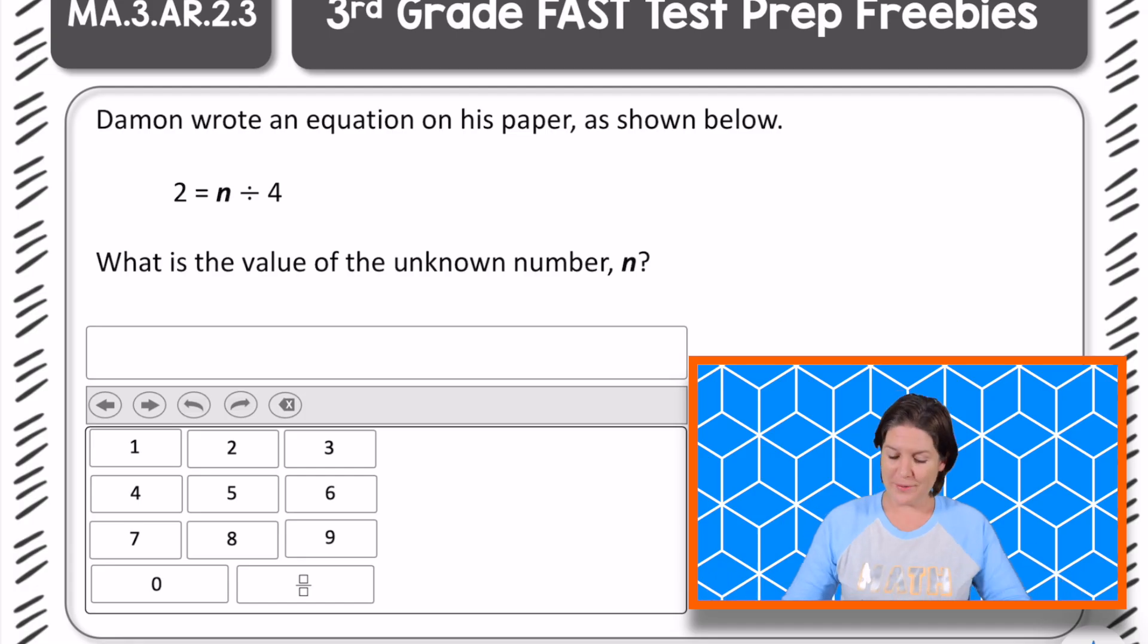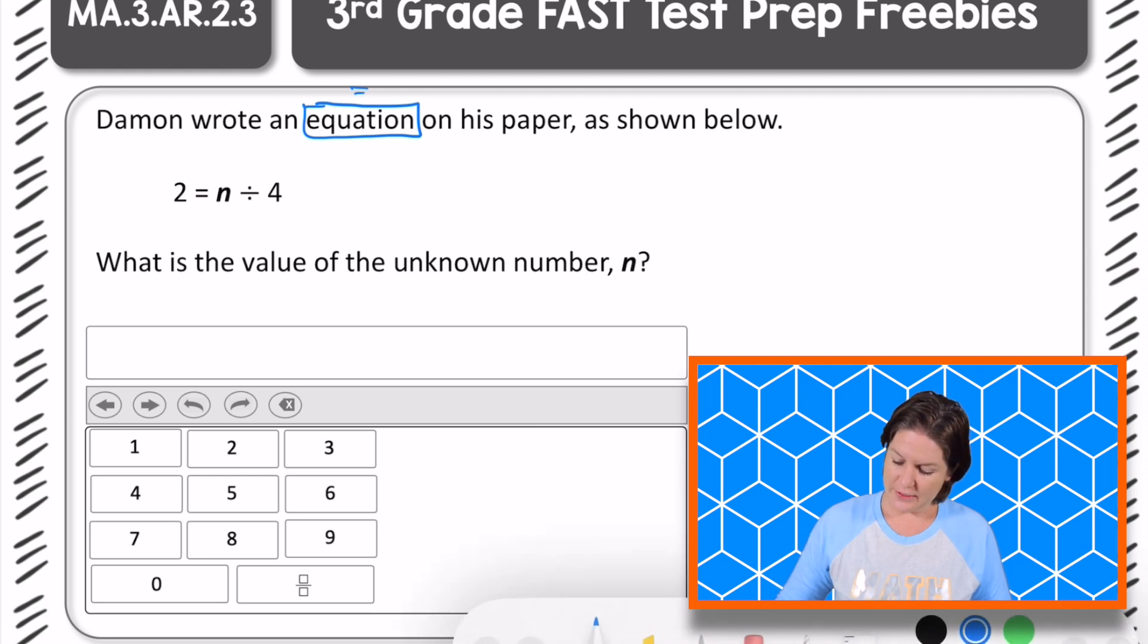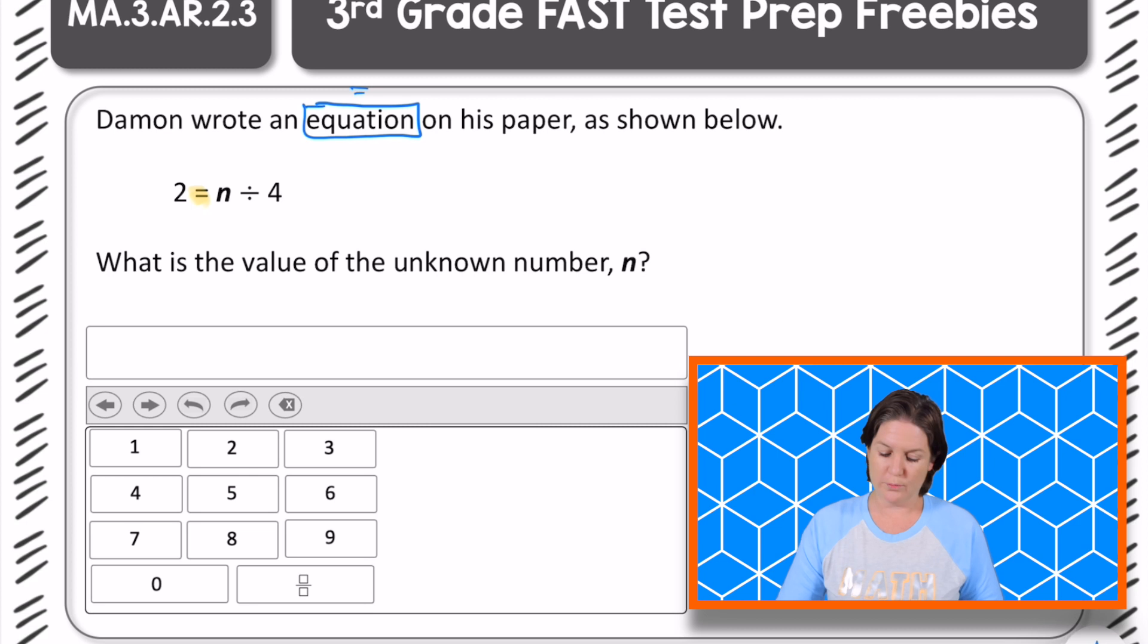All right, third grade, welcome back. Here is your problem. It says that Damon wrote an equation, which means there is an equal sign, and there is, right here. An equation on his paper as shown below. The question says, what is the value of the unknown number that we will call n? And n is right here. So we just need to answer, what is the value, what is the amount that n is representing?